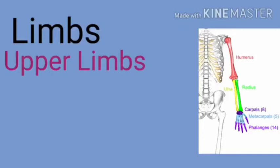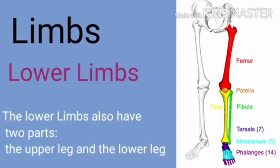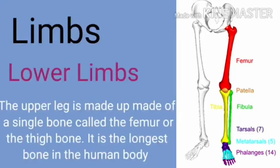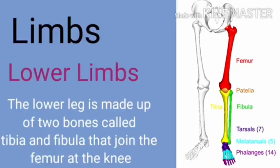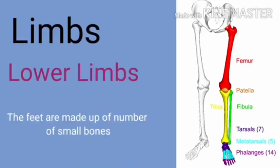Now let us see about the lower limbs. The lower limbs also have two parts — the upper leg and the lower leg. The upper leg is made up of a single bone called the femur, or the thigh bone — it is the longest bone in the human body. The lower leg is made up of two bones called the tibia and fibula. The point where the femur joins the lower leg is called the knee. The ankle and feet together have a total of 26 bones.